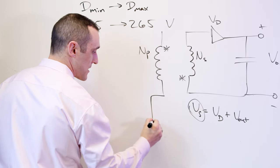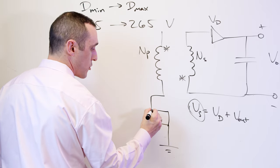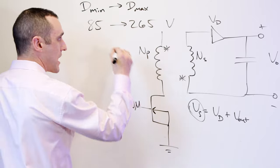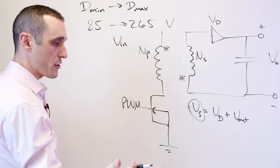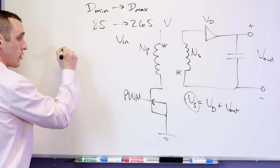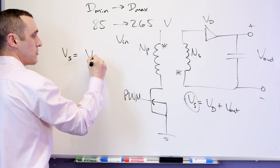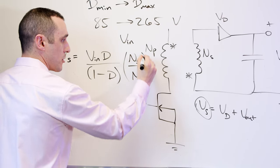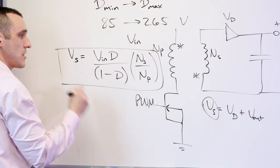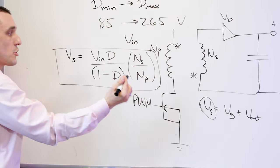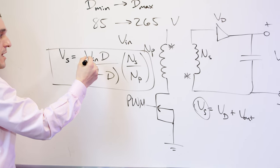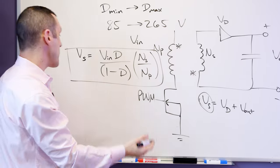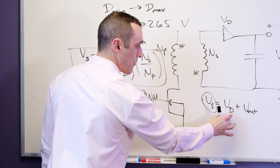The transistor has a particular on/off time determined by the PWM signal, and it's that on and off action that modulates the input voltage V_in to a particular value. The secondary voltage induced on the secondary coil V_S is equal to the input voltage multiplied by the duty cycle quantity, multiplied again by the inverse of the turns ratio N_S / N_P. So you've taken the input voltage, stepped it down by the duty cycle, and stepped it down again through the turns ratio to get the secondary voltage. Then subtract the diode voltage drop to get V_out.